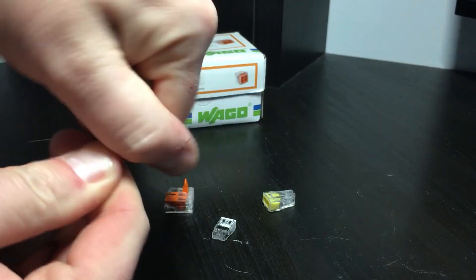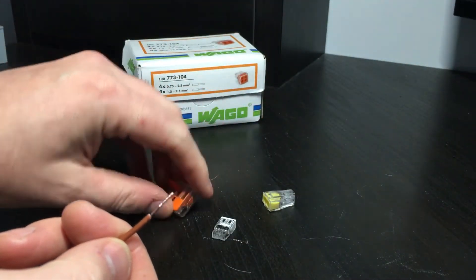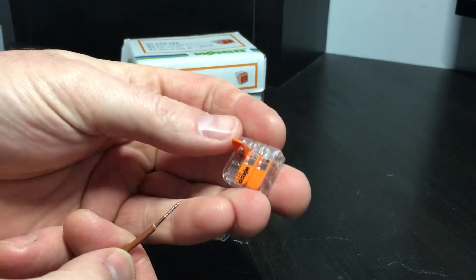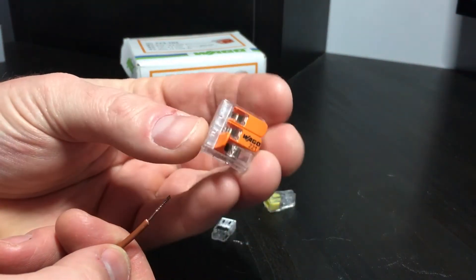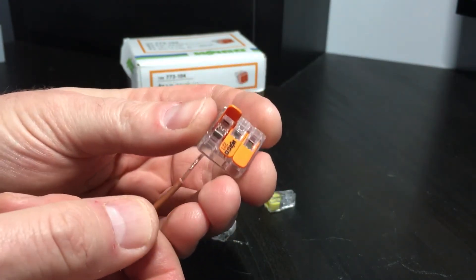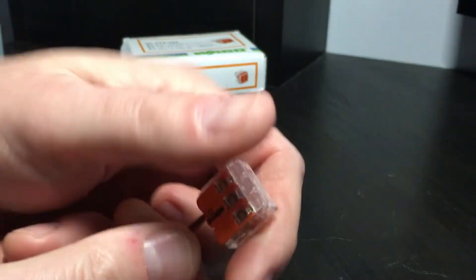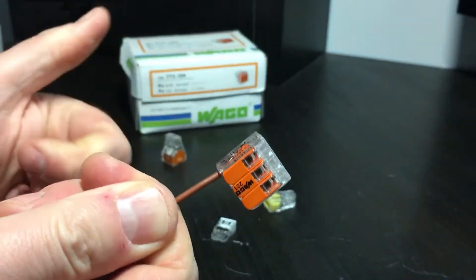But if you turn it around, it does come off without damaging it. The other type that's on the market is this particular type with the lever on, and this again is widely available, made by the same company WAGO. But in this case, you just insert it in, snap the lid down, and away you go. It's not coming out of there.